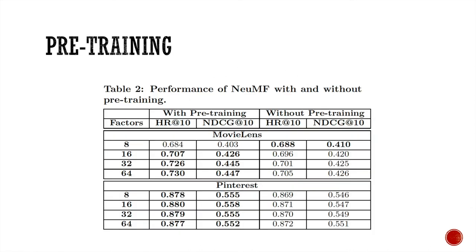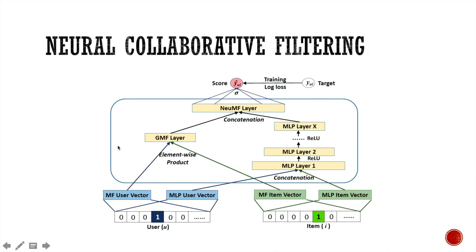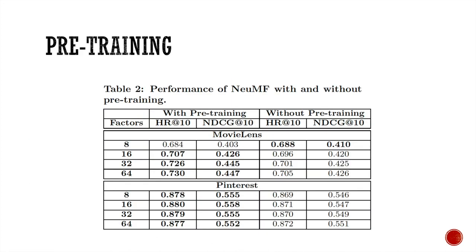The paper also shows that pre-training does help. So what they do is that they train GMF and MLP individually, store the weights when training is done, and use those weights as the initial point for training the new NCF model. And you can see that pre-training gives you better performance compared to without pre-training.